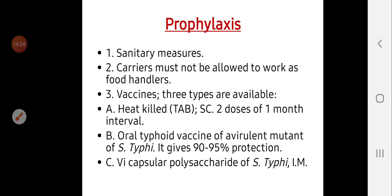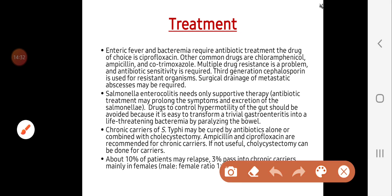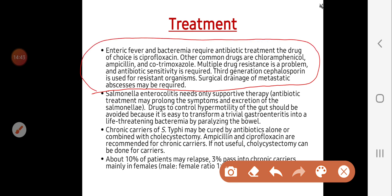Treatment is divided according to the disease presentation. For enteric fever and bacteremia — serious conditions — antibiotics are required. The drug of choice is ciprofloxacin; other options include chloramphenicol, cotrimoxazole, and ampicillin. Drug resistance is a problem, so antibiotic sensitivity testing may be required. If resistant, third-generation cephalosporins may be used. Surgical drainage of metastatic abscesses may also be required.